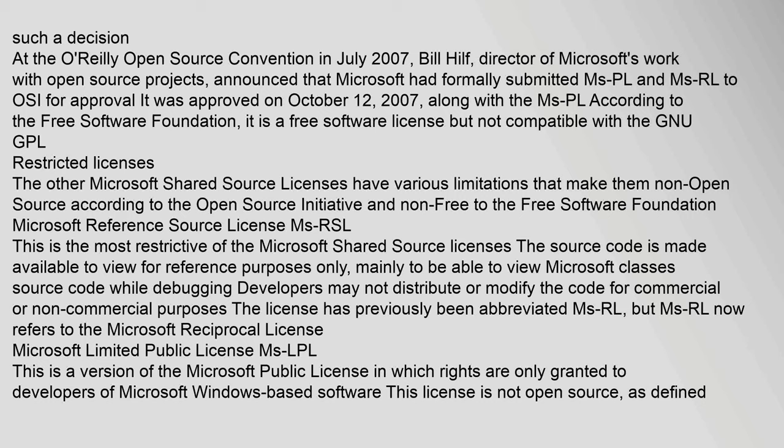Restricted Licenses: The other Microsoft Shared Source licenses have various limitations that make them non-open-source according to the Open Source Initiative and non-free to the Free Software Foundation. Microsoft Reference Source License (MsRSL): This is the most restrictive of the Microsoft Shared Source licenses. The source code is made available to view for reference purposes only — mainly to be able to view Microsoft class source code while debugging. Developers may not distribute or modify the code for commercial or non-commercial purposes. The license has previously been abbreviated MsRL, but MsRL now refers to the Microsoft Reciprocal License.